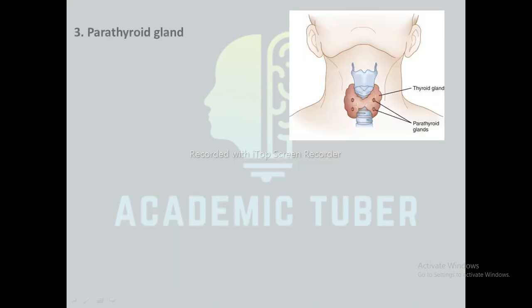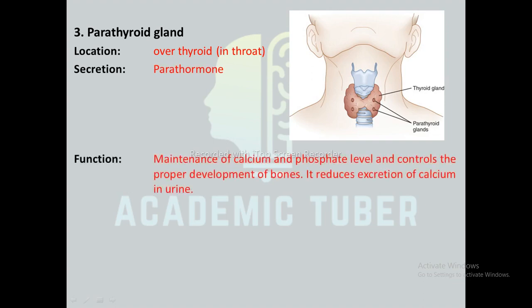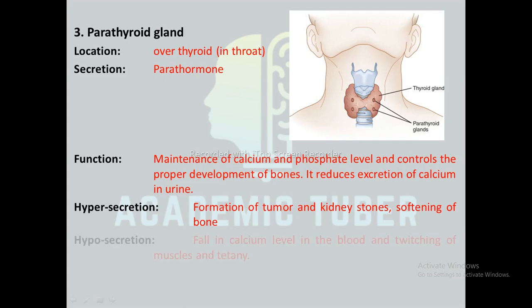Parathyroid gland: here is a diagram showing the parathyroid gland in our body. It is located over the thyroid gland in the throat. The secretion of this gland is known as parathormone. The function of parathormone is to maintain calcium and phosphate levels and control the proper development of bones. It also reduces the excretion of calcium in urine. Hypersecretion causes formation of tumors and kidney stones and softening of bones, whereas hyposecretion causes a fall in calcium levels in the blood, and twitching of muscles and tetany.